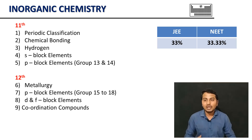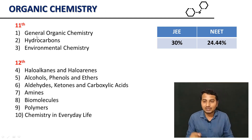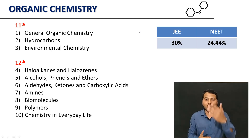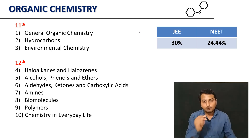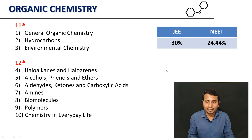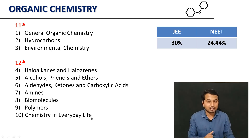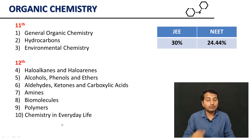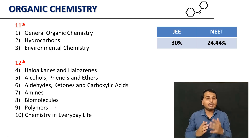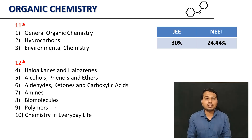In organic chemistry, we have covered three chapters in the 11th standard, which is general organic chemistry. Topics include hydrocarbons, alkynes, aromatic compounds. In the 12th standard, organic chemistry covers alkynes, alcohol, phenol, aldehyde, amines, and alkaline compounds.